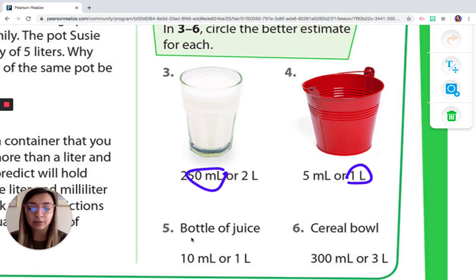Then I'm going to go down to number five, and it says a bottle of juice. So in my mind, I'm thinking orange juice or apple juice. It says 10 milliliters or one liter. So I'm thinking in my mind, and I'm remembering that my direction said that it is an estimate, and we know that an estimate is just our best guess.